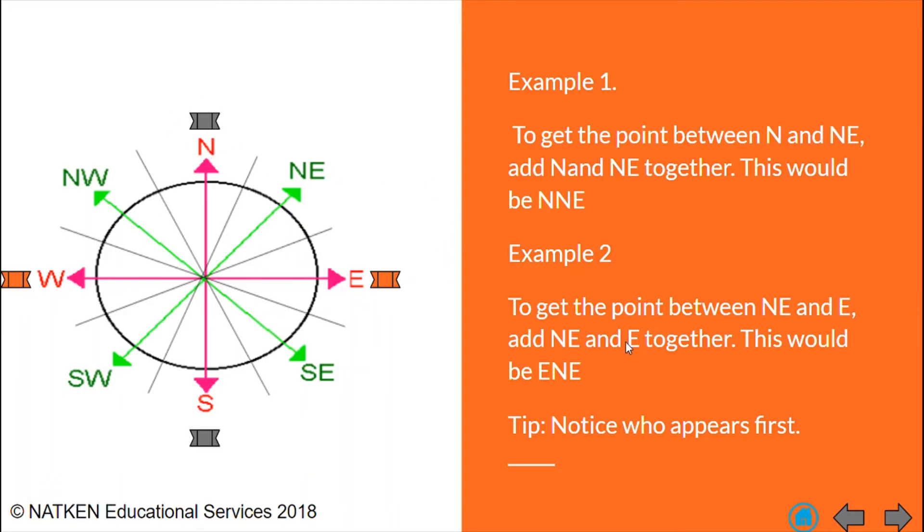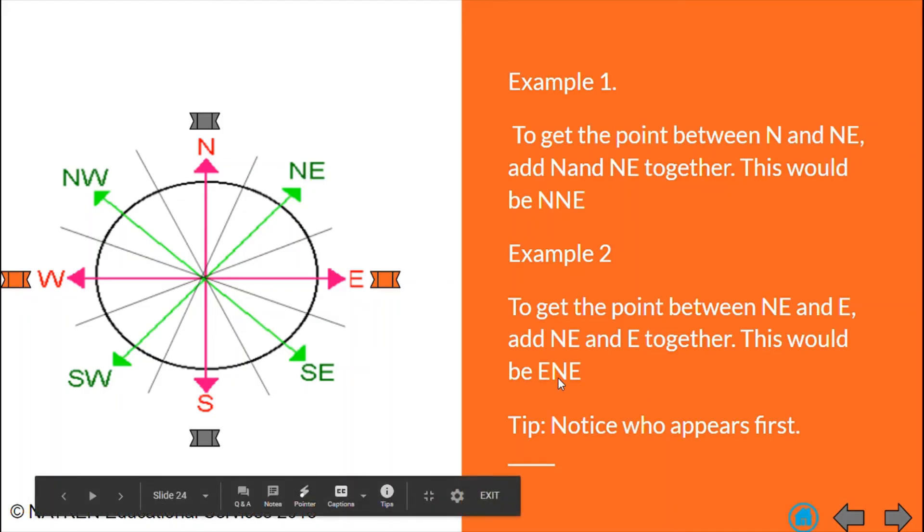Example number two. To get to the point between north east and east we would put them together just the same. East would now be our little princess which is royalty. So she certainly goes first. So we would have east first and then we have north east. So we have east north east.